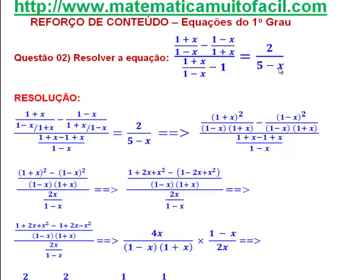Então, eu tenho o seguinte: essa equação está definida para todos os valores reais, menos para 3. Não pode ser mais 1, não pode ser menos 1, e também não pode ser mais 5. Vamos começar a partir daí. Então, se eu encontrar um desses valores, a minha equação é impossível. Vamos torcer para não encontrar, para que a gente tenha uma solução.